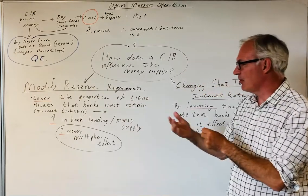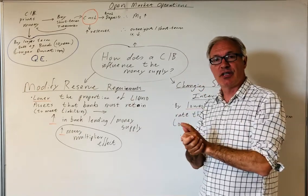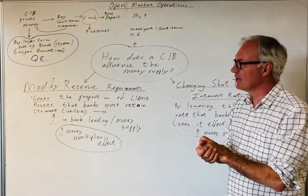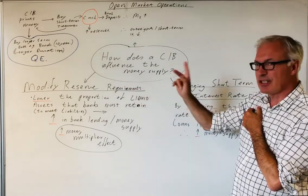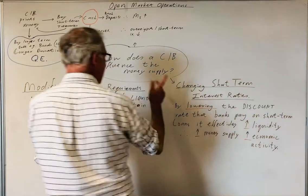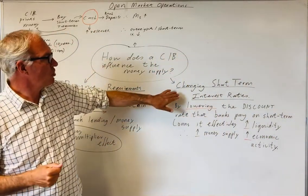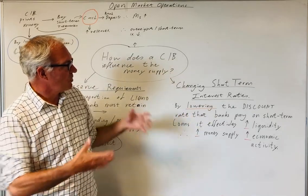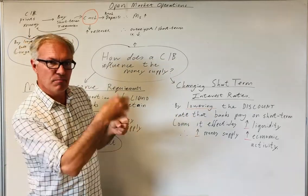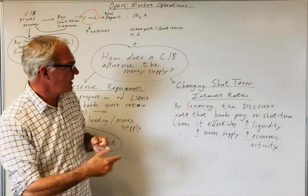That will then reduce the money supply. So modifying reserve requirements is a key area. The second key area is changing short-term interest rates, so the discount rates that the central banks charge commercial banks for lending overnight or for a brief period of time.